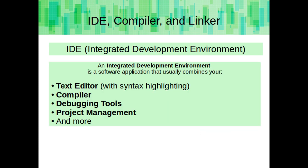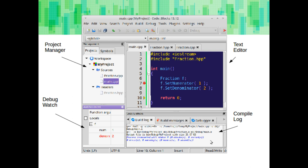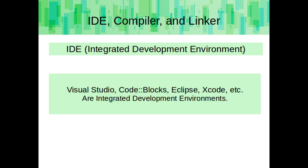An IDE, or Integrated Development Environment, is a software application that usually combines your text editor with syntax highlighting, compiler, debugging tools, project management, and perhaps other features. This is what the Codeblocks IDE looks like. I have a code window, and I can build my program from within Codeblocks. It gives me a status window below my code that tells me whether the compilation process succeeded or failed. It also has debugging tools and a project manager. Visual Studio, Codeblocks, Eclipse, and Xcode are examples of integrated development environments.